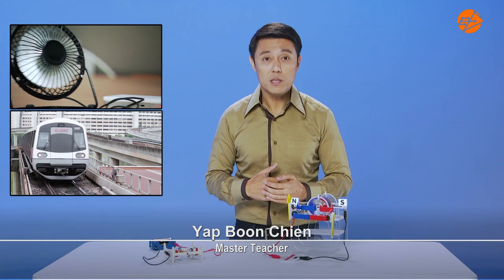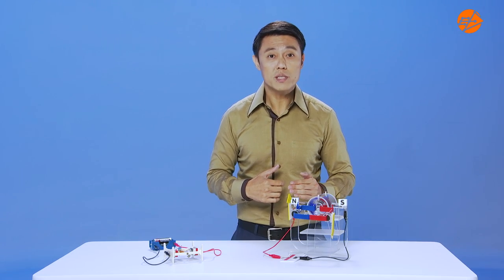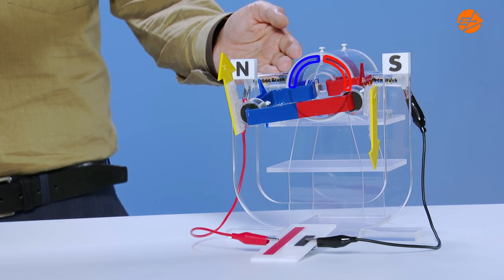Many objects around us operate on electricity. However, they will not move continuously without this component, the split ring.